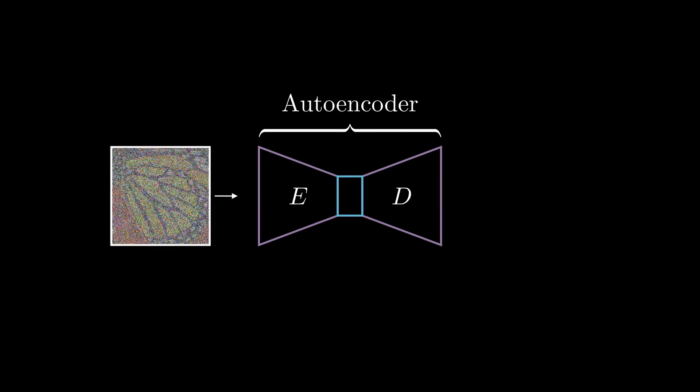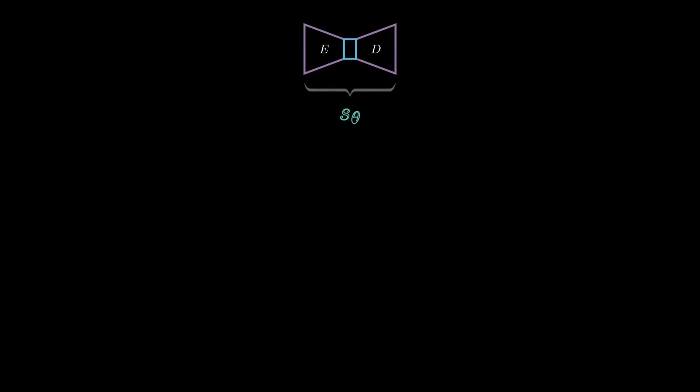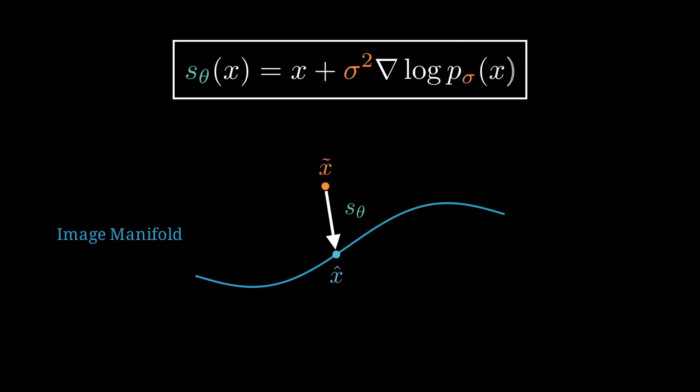With deep learning denoisers, we can start with extremely noisy images and turn them back into something meaningful. But these denoisers don't just learn to recover clean images, they also learn something deeper, the structure of the underlying data distribution. And this connection even becomes explicit thanks to Tweedy's formula. But why is this structure so important? What can we do with it? Let's find out.